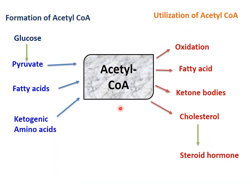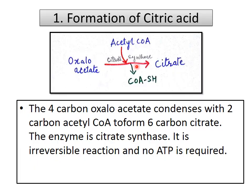Acetyl coenzyme A is synthesized from pyruvate, from fatty acid oxidation, and from ketogenic amino acid oxidation. It is ultimately utilized in the synthesis of fatty acids, oxidation by TCA cycle, synthesis of ketone bodies, cholesterol, and steroid hormones — all requiring acetyl coenzyme A. One of the fates of acetyl coenzyme A is to run the TCA cycle, where it is converted to 2 molecules of CO2, releasing a large amount of ATP.